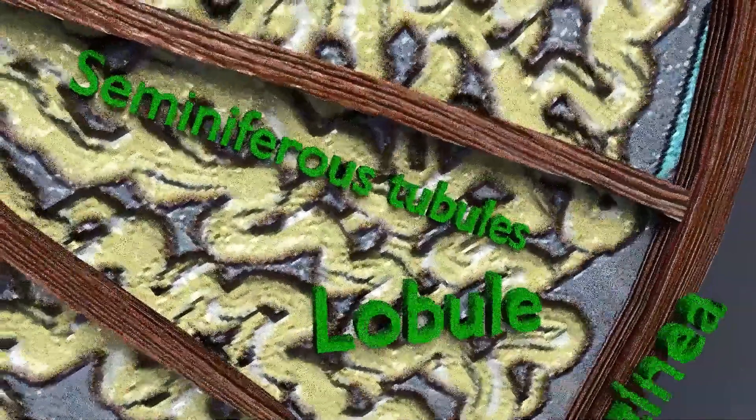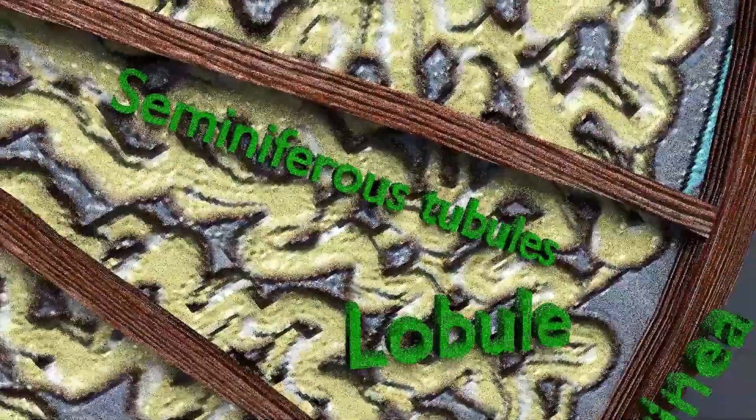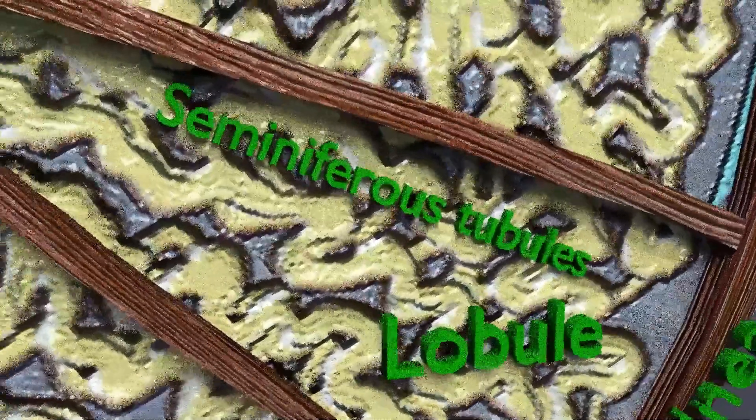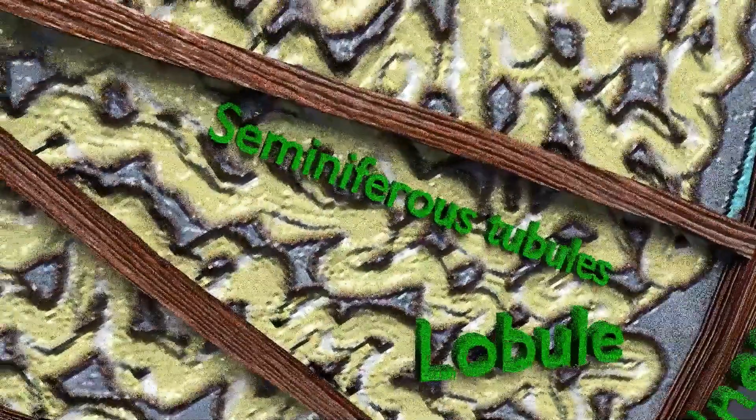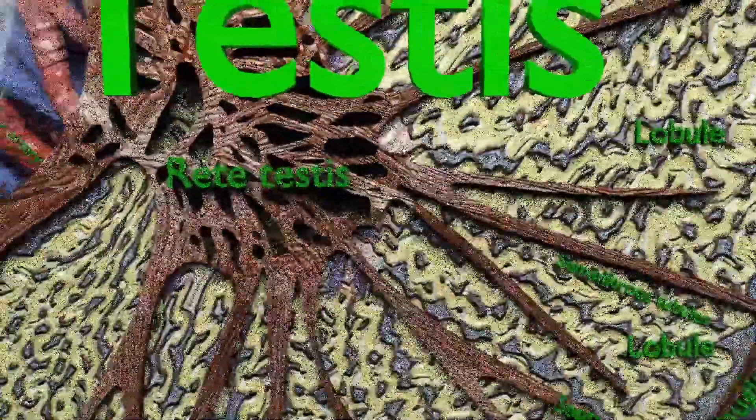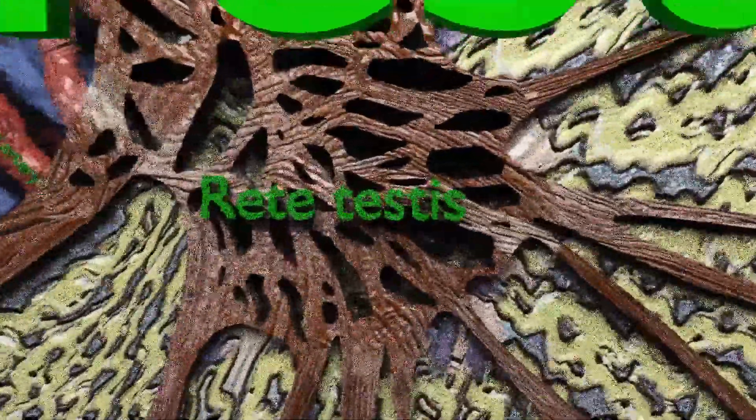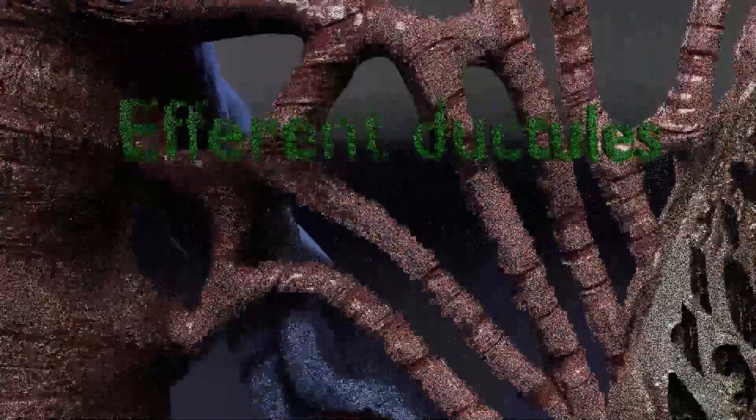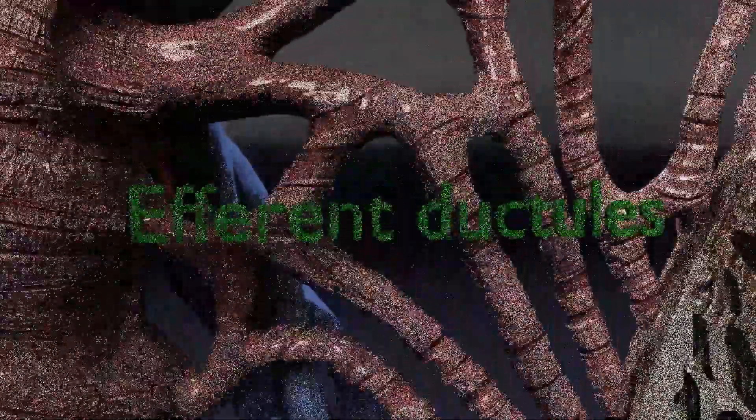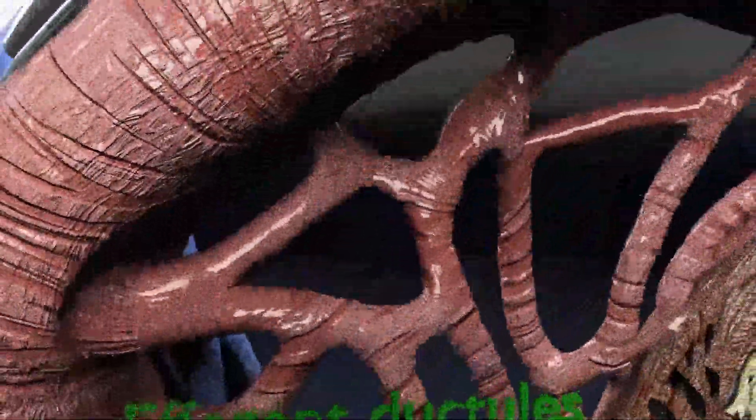Seminiferous tubules join together at apices of lobules to form 20 to 30 straight tubules. They anastomose with each other to form rete testis. Rete testis gives rise to 12 to 30 efferent ducts. The efferent ducts enter the epididymis.